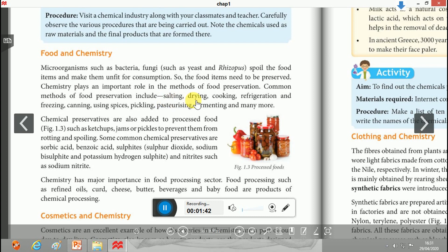Common methods of food preservation include salting, drying, cooking, and also use of some chemicals. Chemical preservatives are also used in processed foods such as ketchups, jams, and pickles to prevent them from rotting and spoiling.